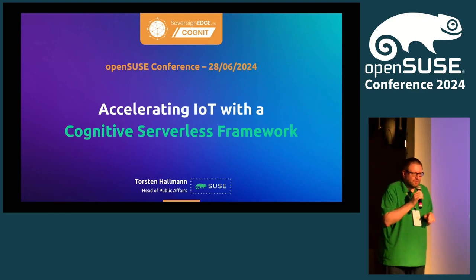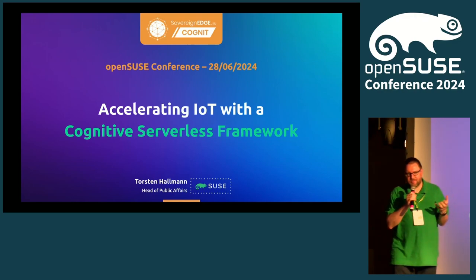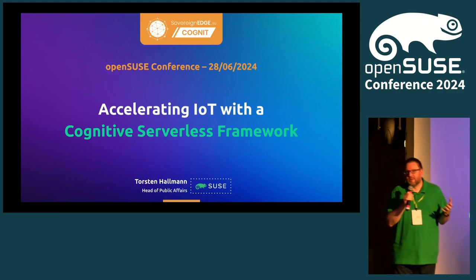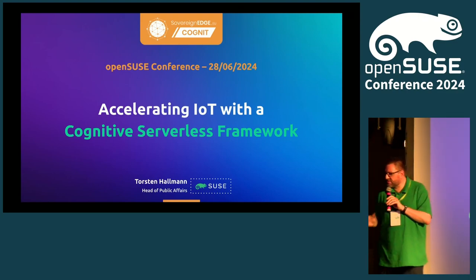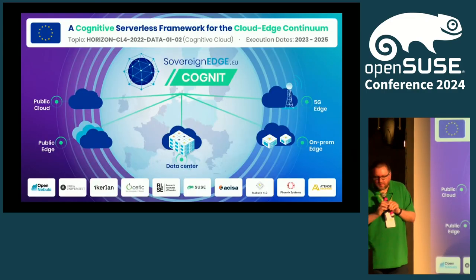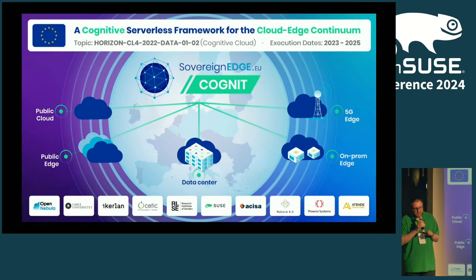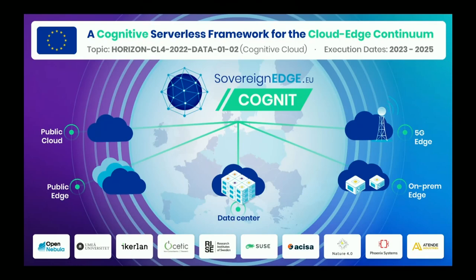The problem we see within edge computing is that you typically have a constrained environment. You can do edge computing everywhere, but do you really want to put a big machine everywhere for your computational needs? That was one of the reasons why we formed a consortium in an EU project that started last year, targeted for three years — 18 more months to go. The consortium includes SUSE, Open Nebula, and research organizations like the Jumea University and Rice University in Sweden.